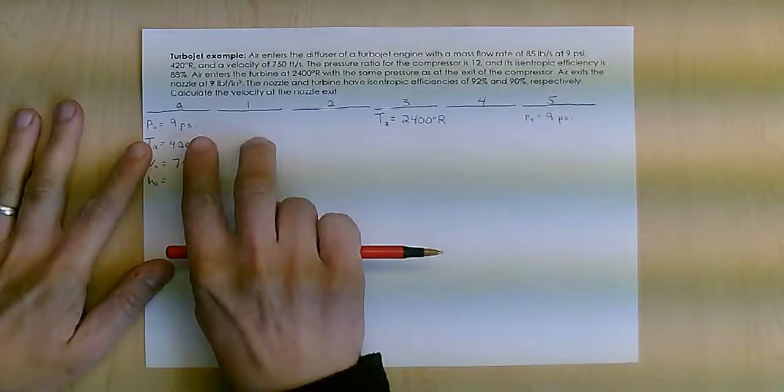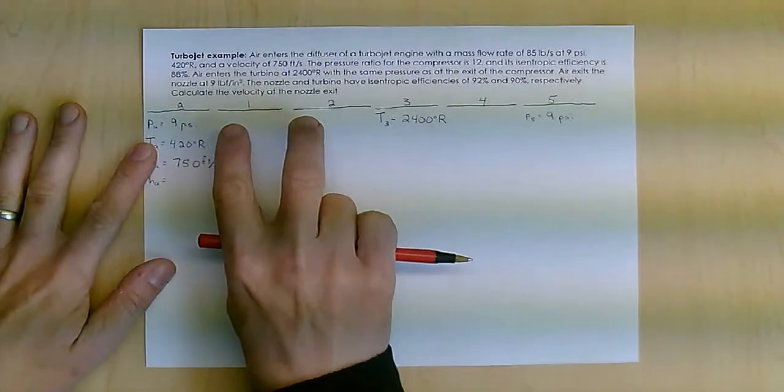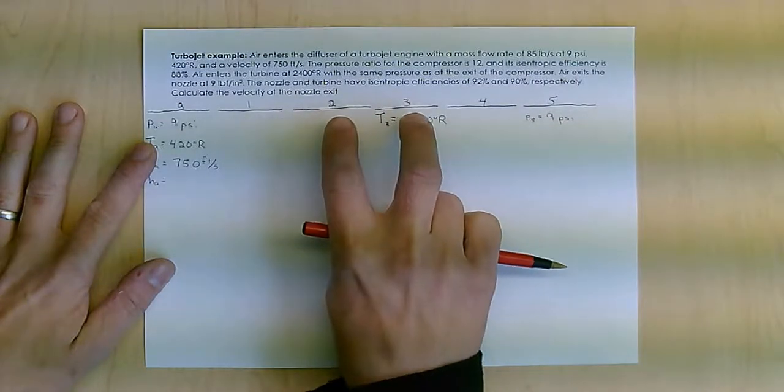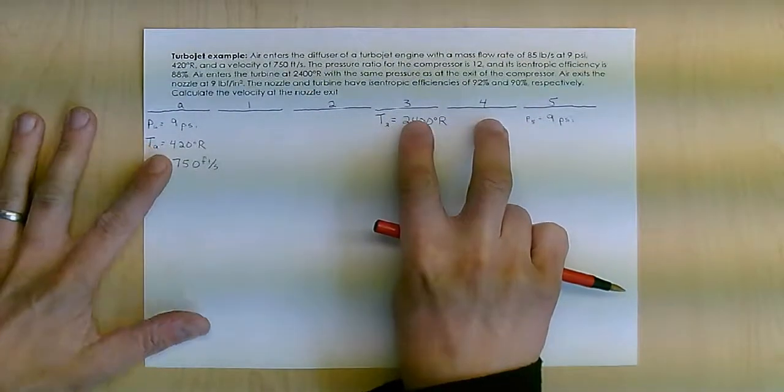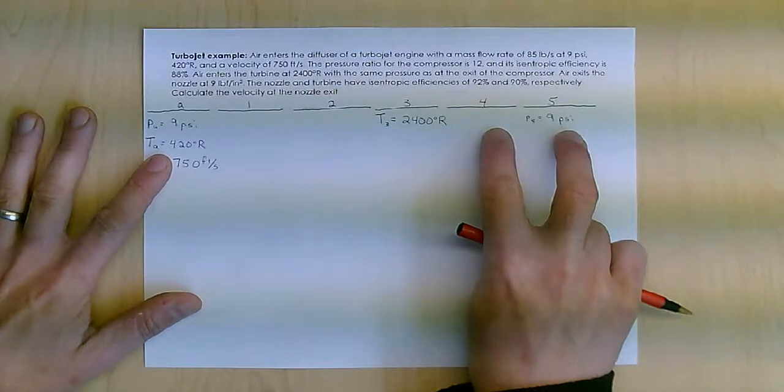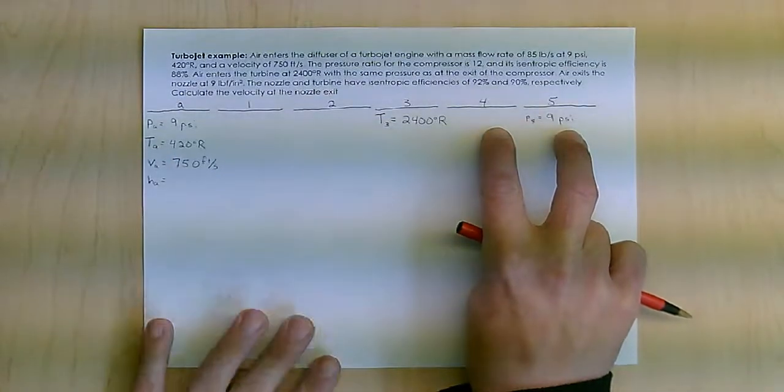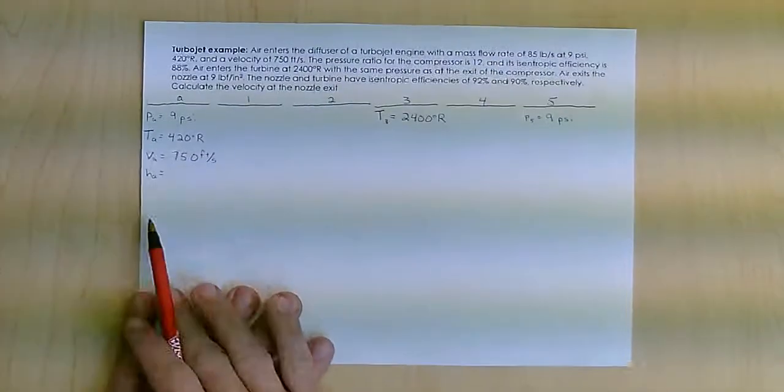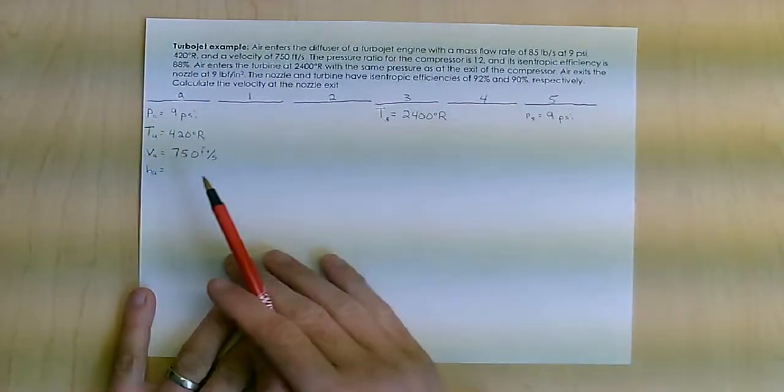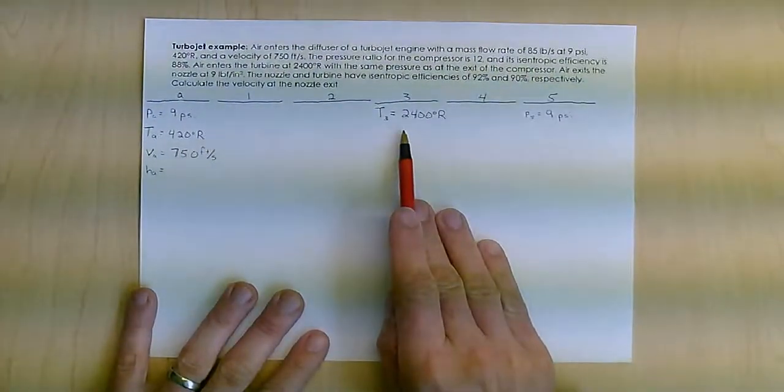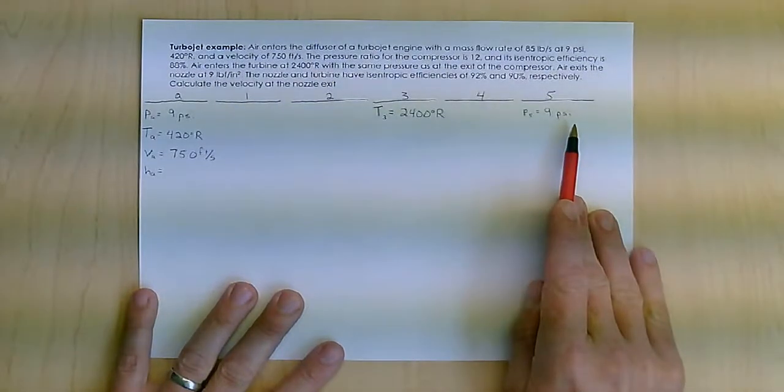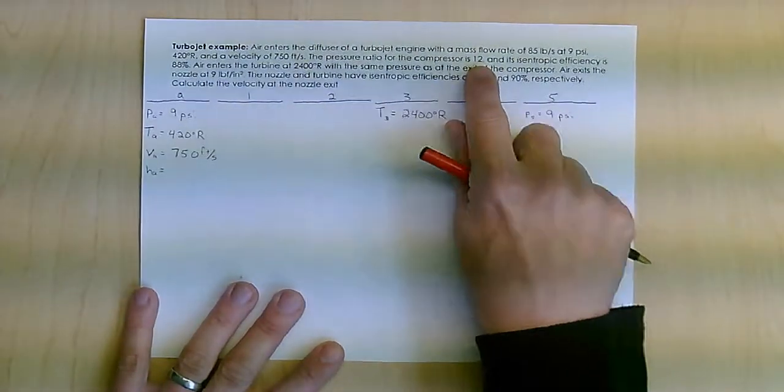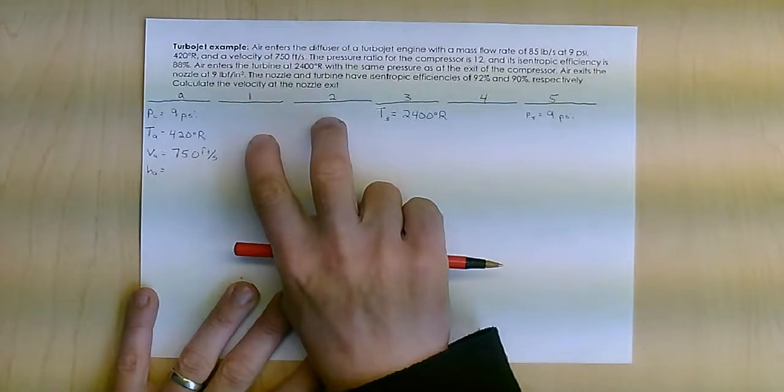I've got a turbojet. So again, what I have is a diffuser, compressor, combustor, turbine, and the nozzle. I've got a bunch of efficiencies given in there. I basically know what's coming in. I also know what goes into the turbine, and I know the pressure coming out. The other thing that I know is that the compressor ratio is 12.